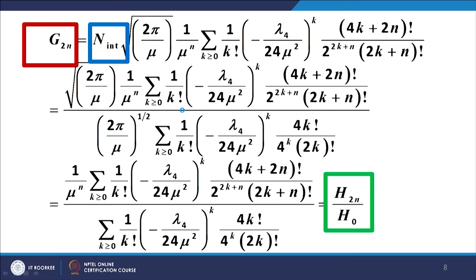I reiterate: there is one step involving the flipping of the integral sign with the summation sign. As far as the generating function for the green functions is concerned, we proceeded on similar lines — we again used the trick of flipping the summation and the integral — and got the expression in the green box at the bottom of the slide. Introducing the normalization, the two factors sqrt(2pi / h_0) over mu cancel between numerator and denominator, and the remaining expression can be represented as h_{2n} upon h_0, where h_0 comes from normalization and h_{2n} is related to G_{2n}, the 2n-th green function.